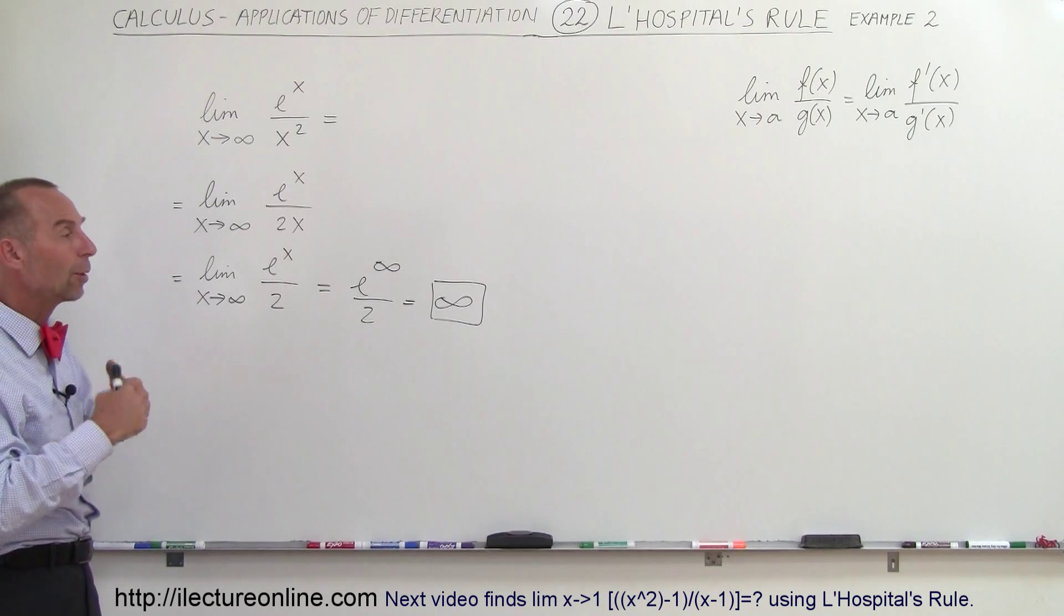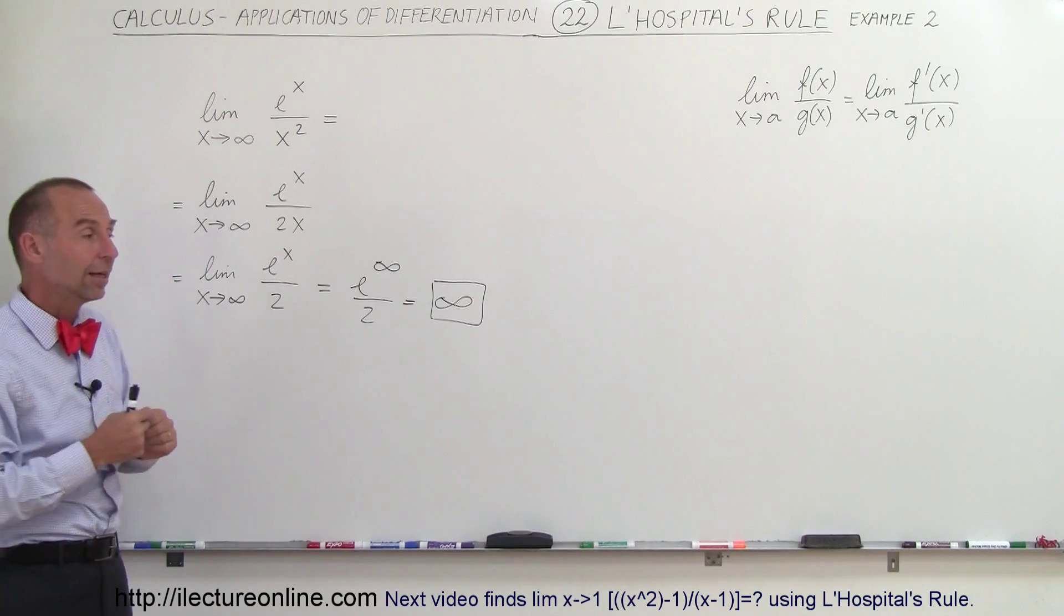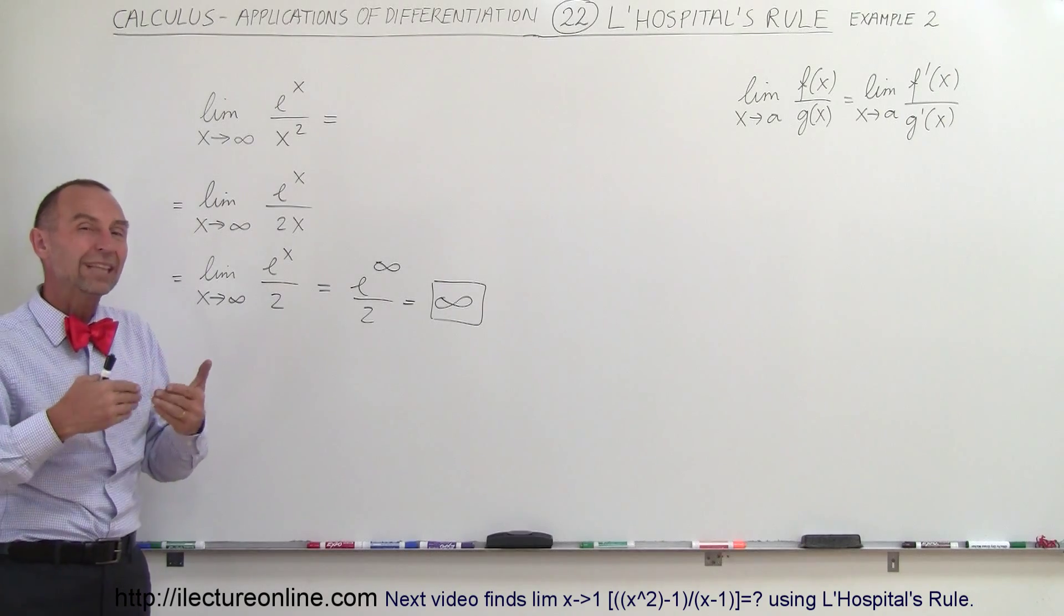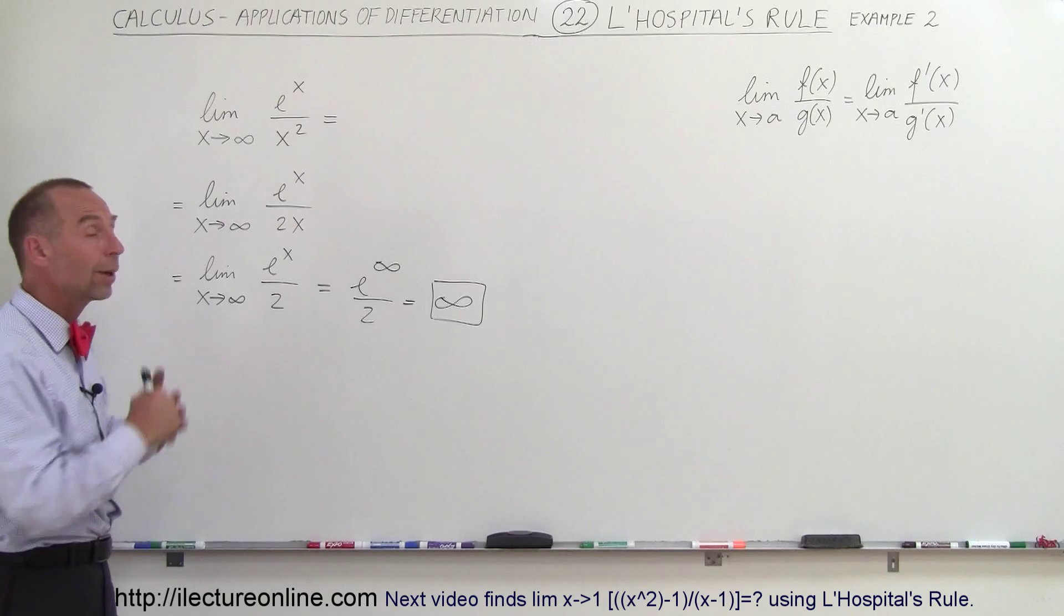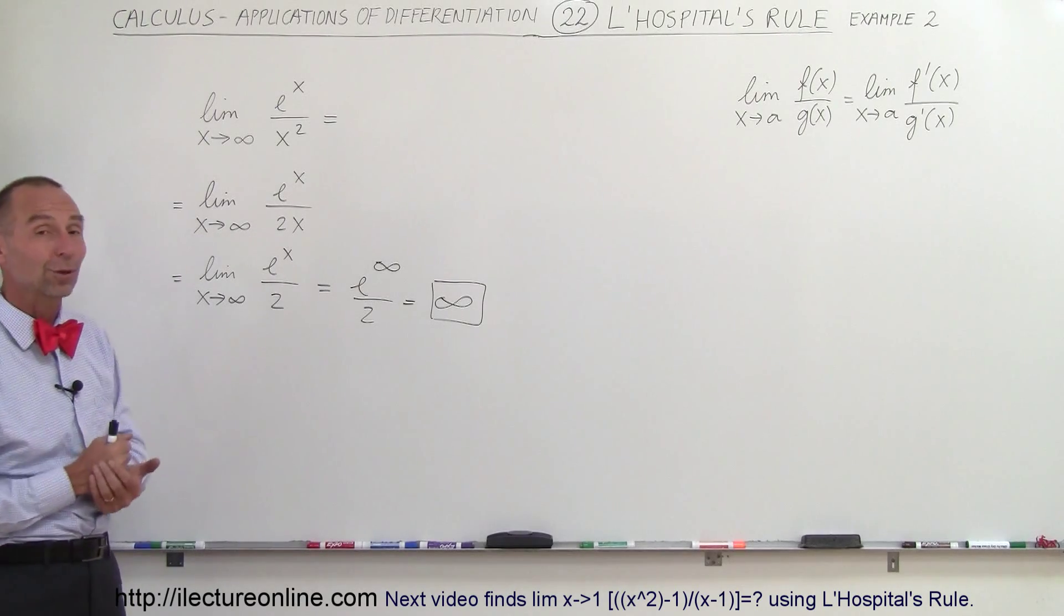L'Hôpital's rule always says no matter what the numerator and the denominator is, if you take the limit and you have an indeterminate form you can then take the derivative of the numerator, the derivative of the denominator and evaluate it again and see what you get this time. And that's how this works.